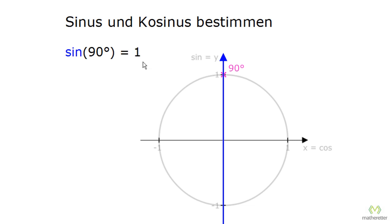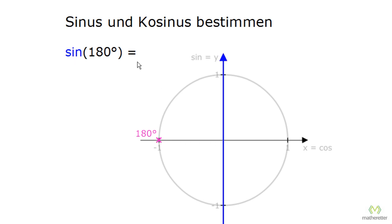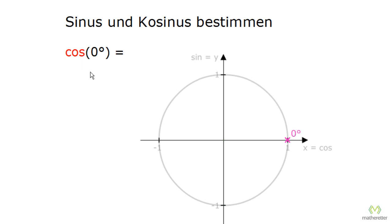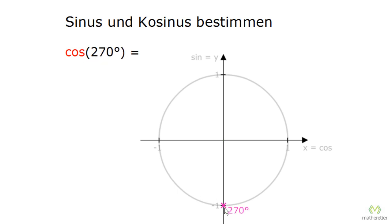If you ask what is the sine of 180 degrees, set the point at 180 degrees; we are asked for sine, which is the value on the y-axis, and that is 0. So the sine of 180 degrees is 0. And for cosine you do it the same way: you find 0 degrees, for cosine we need the x-axis, and the x value here is 1. So cosine of 0 degrees is 1. And if someone asks about cosine of 270 degrees, you set the angle to 270 degrees; the x-axis is hit at 0. The cosine of 270 degrees is 0.